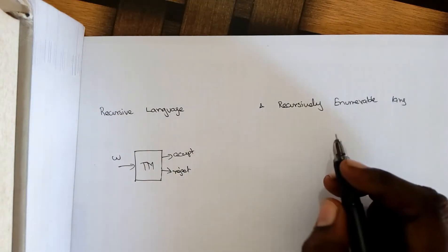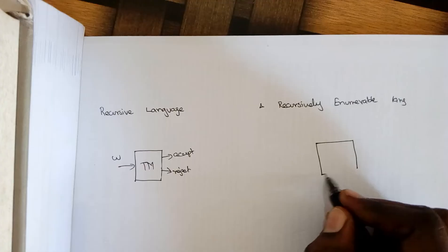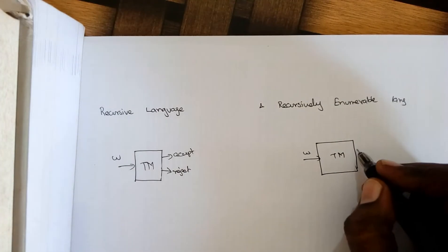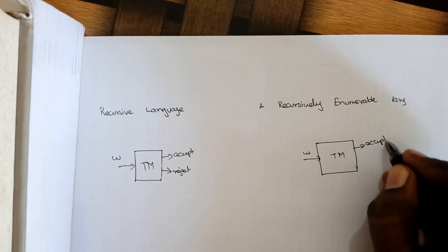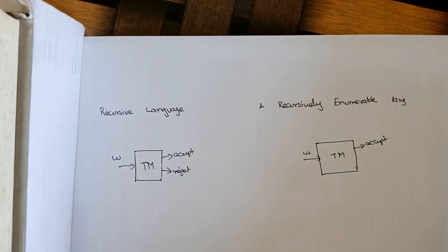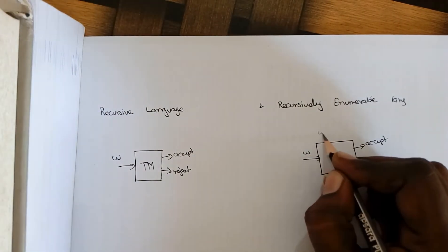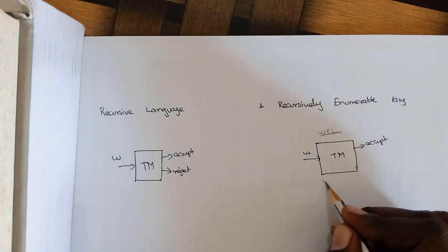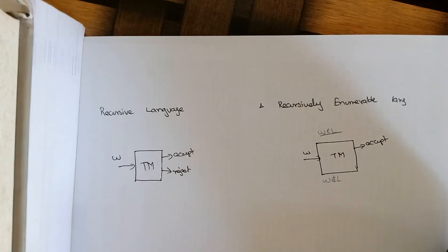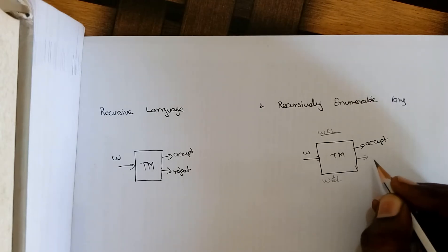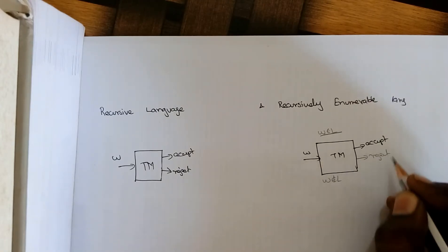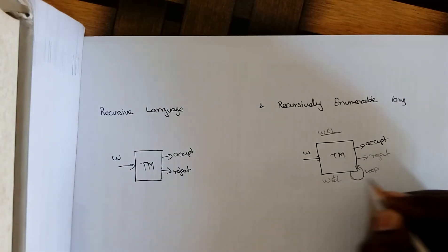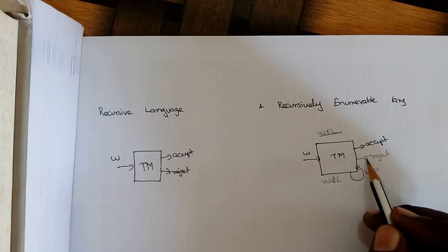A recursively enumerable language is again one for which we construct a Turing machine. When we give an input, if the input is correct it goes to an accepting state. However, the remaining behavior is not defined properly. When the input belongs to the language the Turing machine goes to an accepting state, but when the input doesn't belong to the language there are two possibilities: either the Turing machine goes to a rejection state, or it goes into an infinite loop.